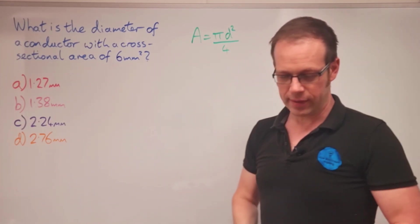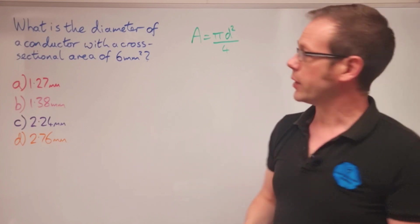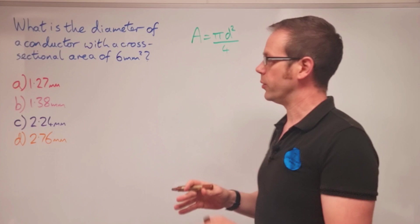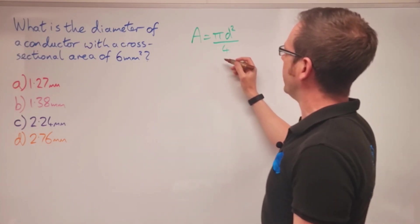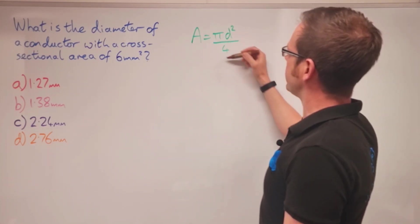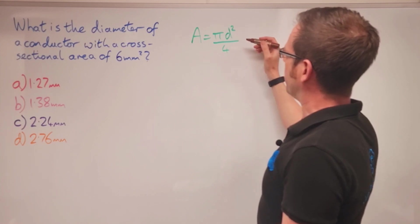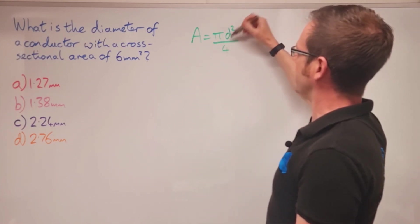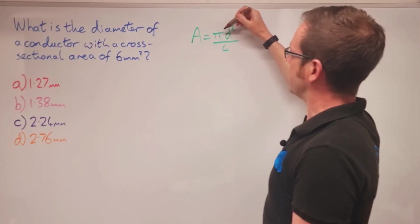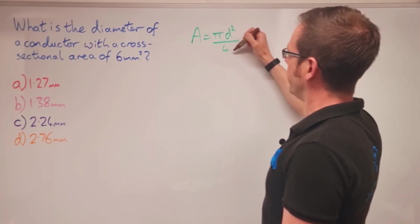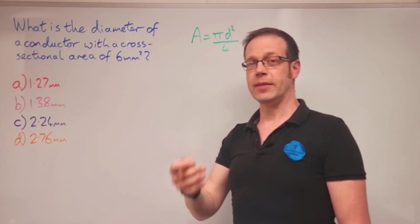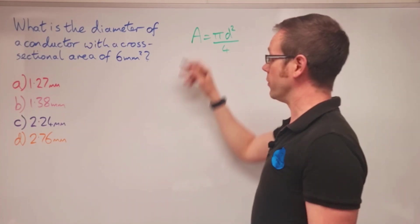Let's work through this line by line. We're going to start transposing this. Using our BODMAS, we do d squared first, then times by pi, then divide by four. That's the order of operations. When we're transposing, we work backwards up that list. The last thing we do is divide by four, so that's the first thing we get rid of.